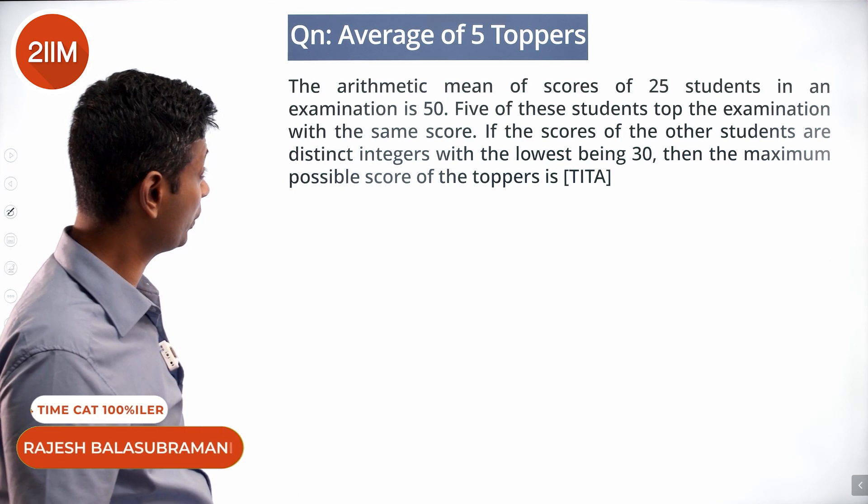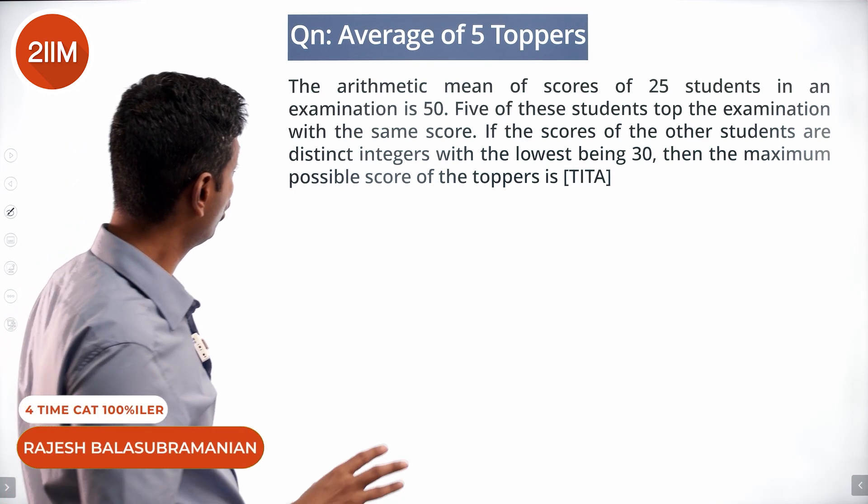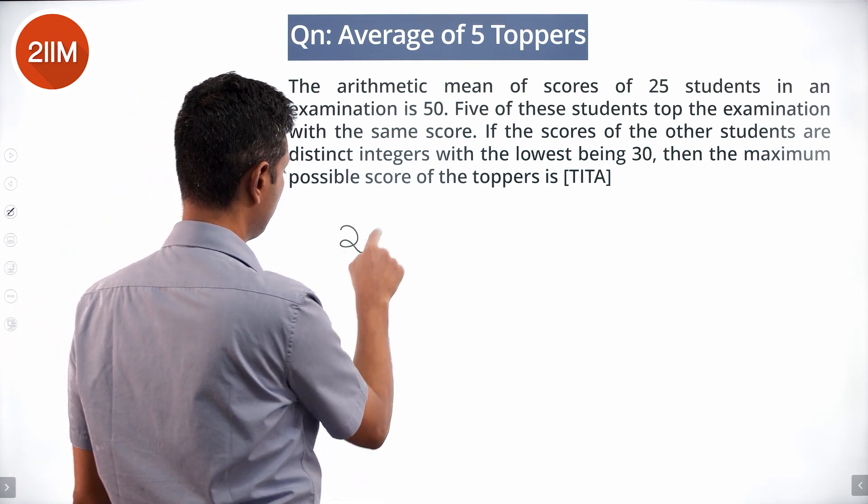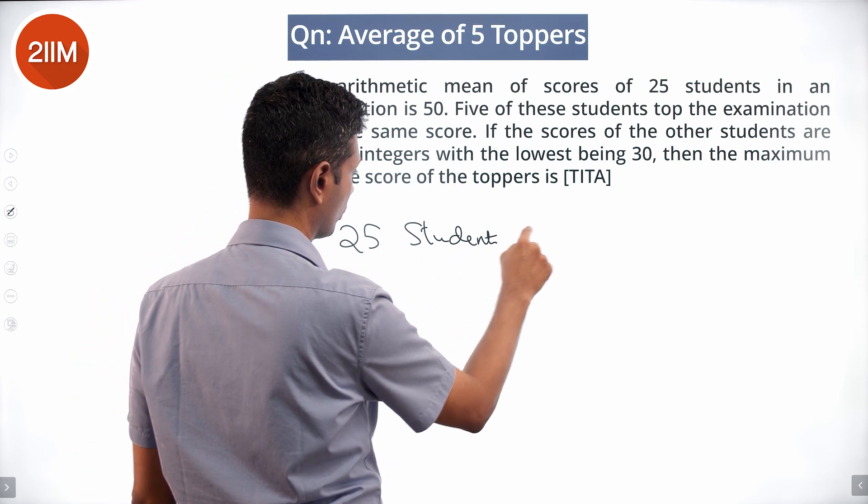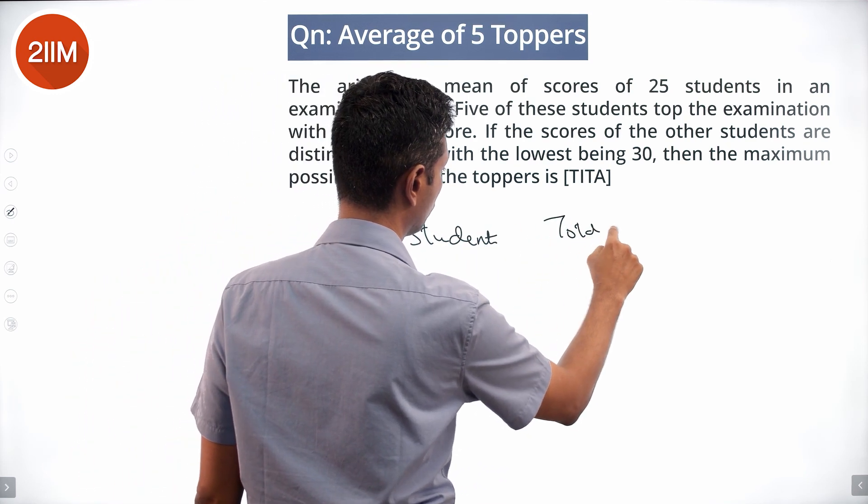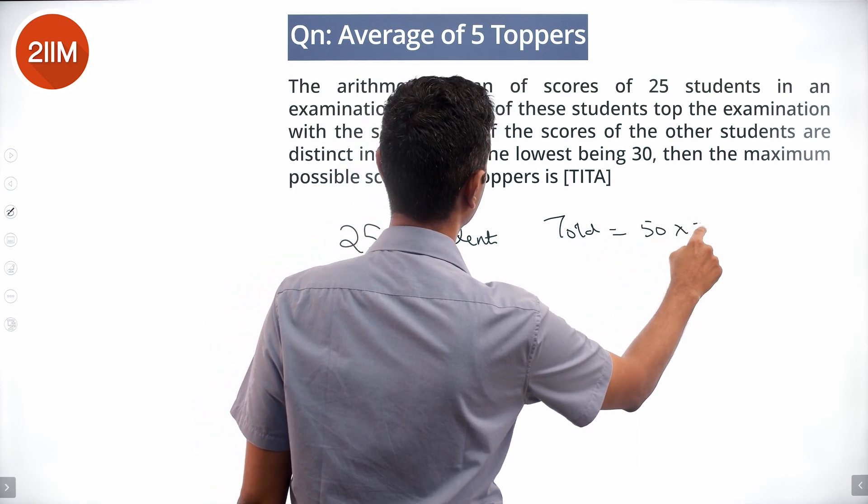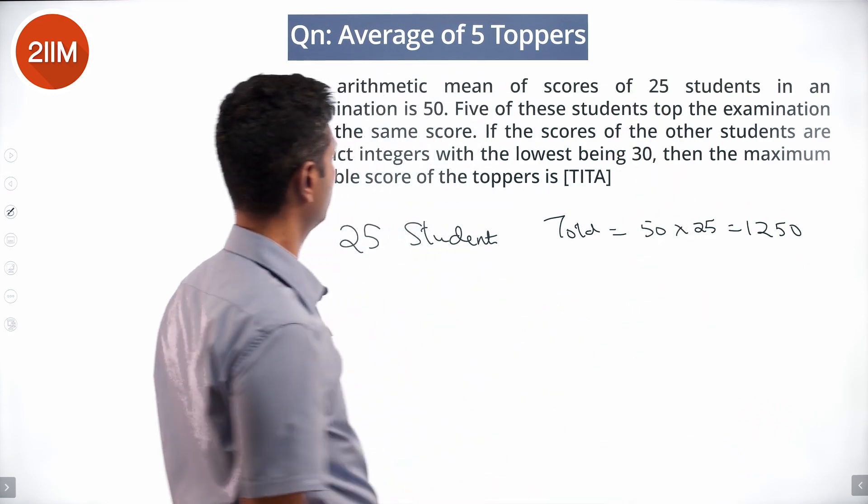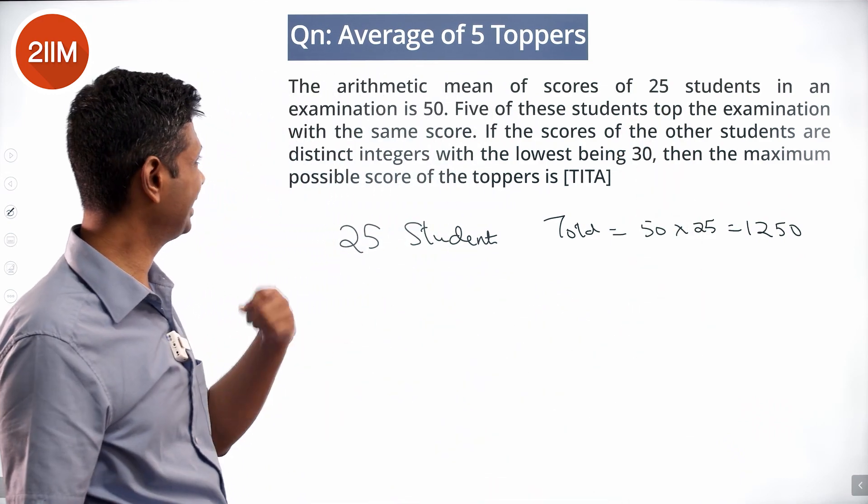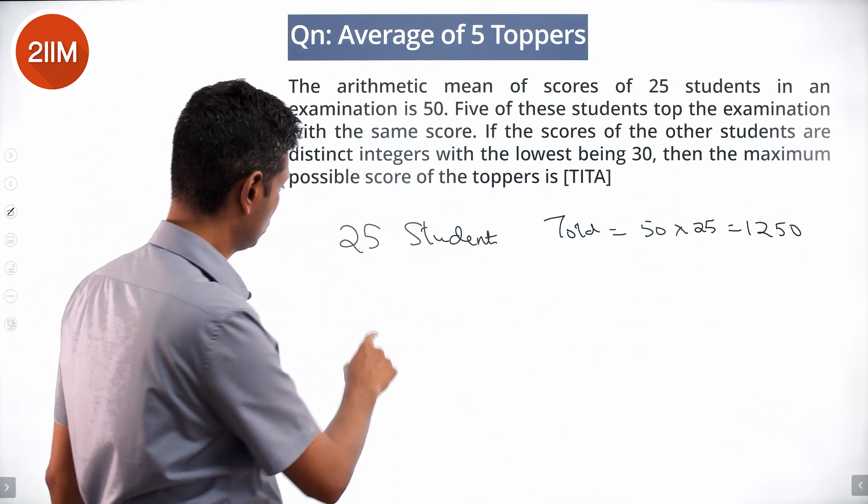The arithmetic mean of scores of 25 students in an exam is 50. So 25 students, total is 50 into 25, which is 1250. Five of these students top the examination with the same score.